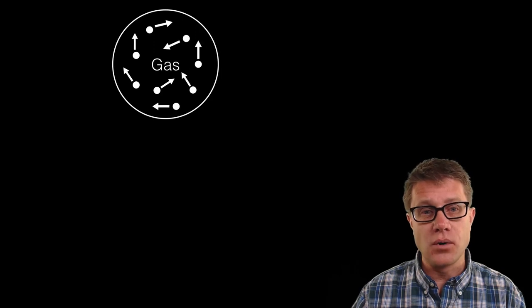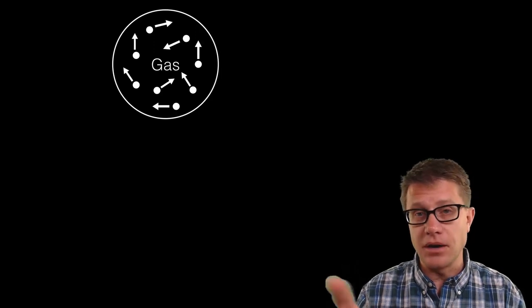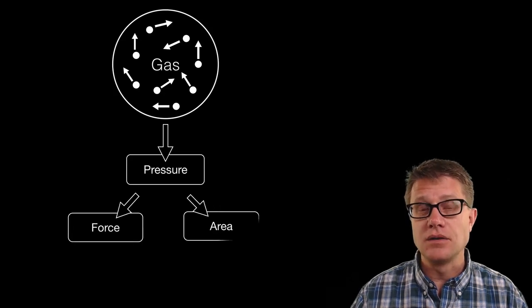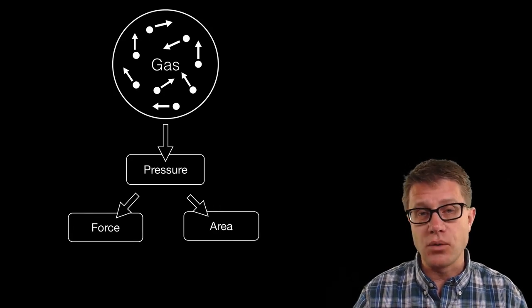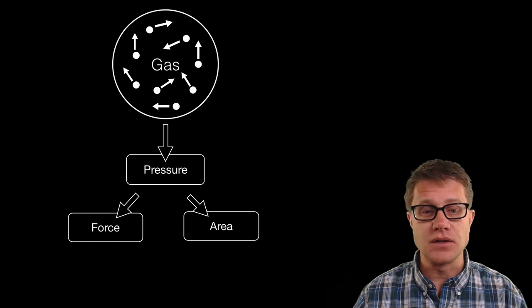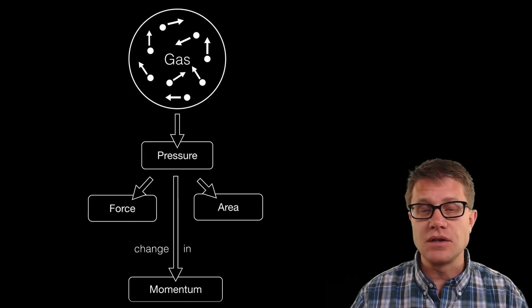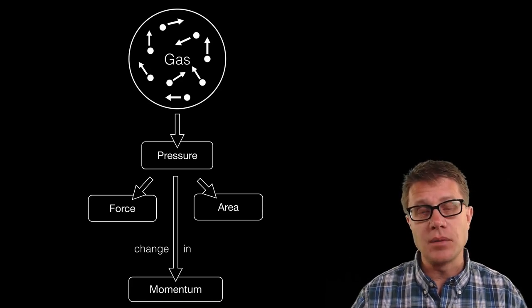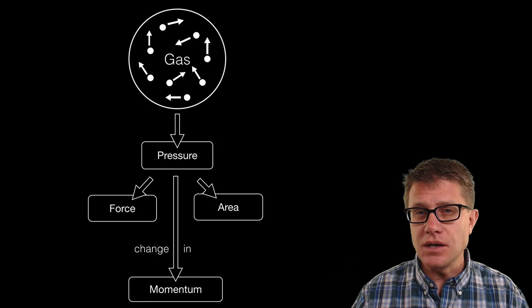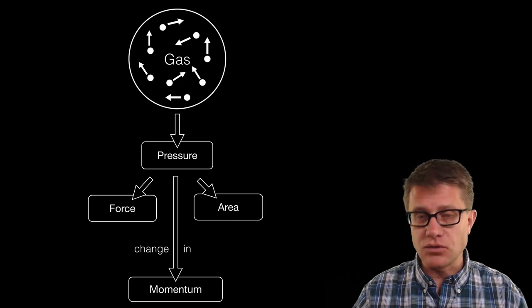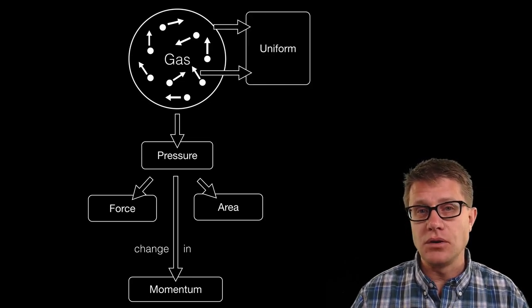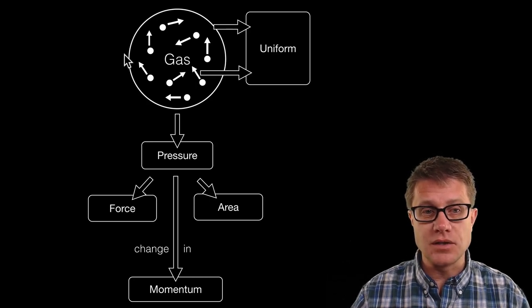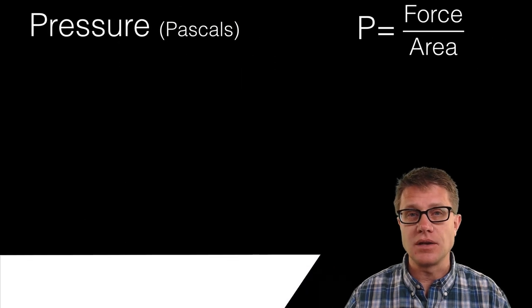And so gas exerts a force on the container in which it is in. It is bouncing around and so that force over the given area is equal to the pressure. How much force is that gas exerting on the surface of the container? Another way to measure that pressure is the change in momentum. As those gas molecules collide with the container, how much does their momentum change? What is neat about gas is since it is randomly moving around, that gas pressure is going to be uniform throughout. So if we have one pressure here it is the same as the pressure on the left side or the pressure on the inside of the container itself.